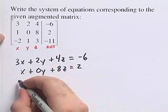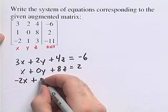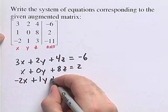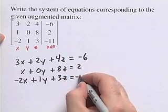And then our third row gives us the equation negative 2x plus 1y plus 3z equals negative 11.